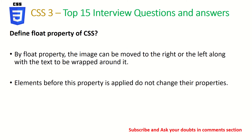What is the CSS float property? By default, any HTML div occupies 100% width. So in order to have multiple elements in the same line, we use the float property. All grids are designed using the float property. When you say float left, the element goes towards the left; when you say float right, it goes towards the right. You can specify the direction in which an element should be aligned.